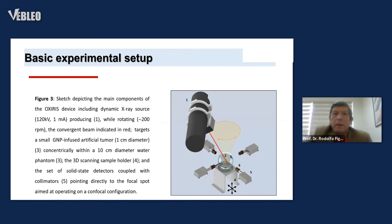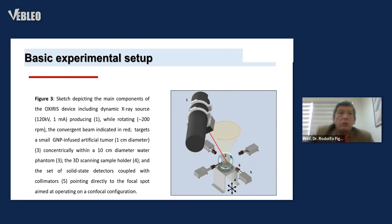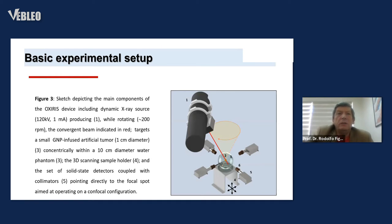Our basic setup: a sketch showing the main components of OXIRIS, including the dynamic vectorized source operating at 120 kilovolts, rotating to concentrate the convergent beam, indicated in red, targeting a small gold nanoparticle-infused artificial tumor of one centimeter diameter, centrally within a 10 centimeter diameter water phantom. The 3D scanning sample holder and a solid-state detector coupled with a collimator pointing directly to the confocal configuration.